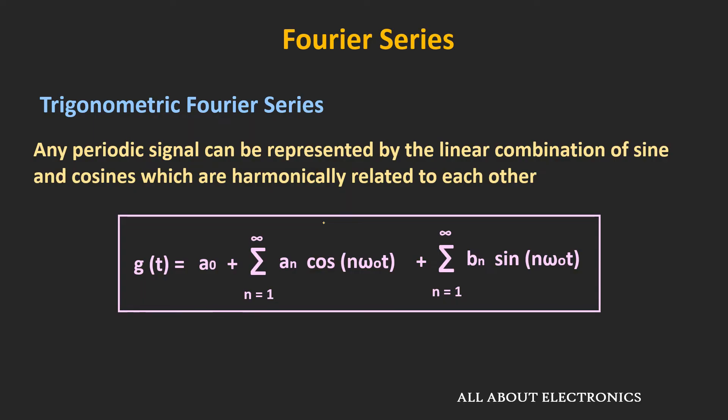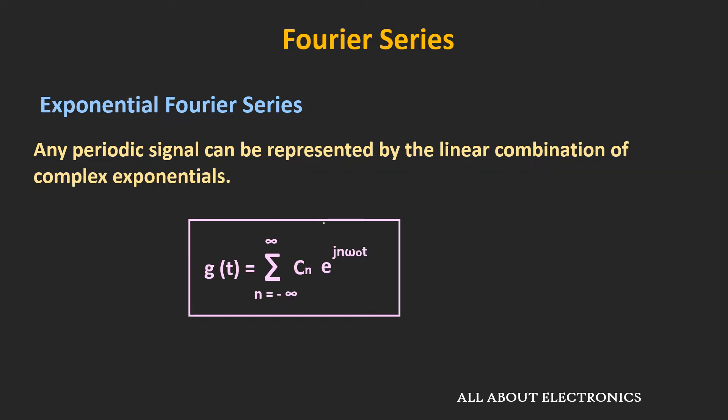In the previous video, we discussed the trigonometric Fourier series, and we saw that using it, any periodic signal can be represented by the linear combination of sine and cosine waves. This exponential Fourier series is another way of representing the periodic signal, where the signal is represented by the linear combination of complex exponentials.